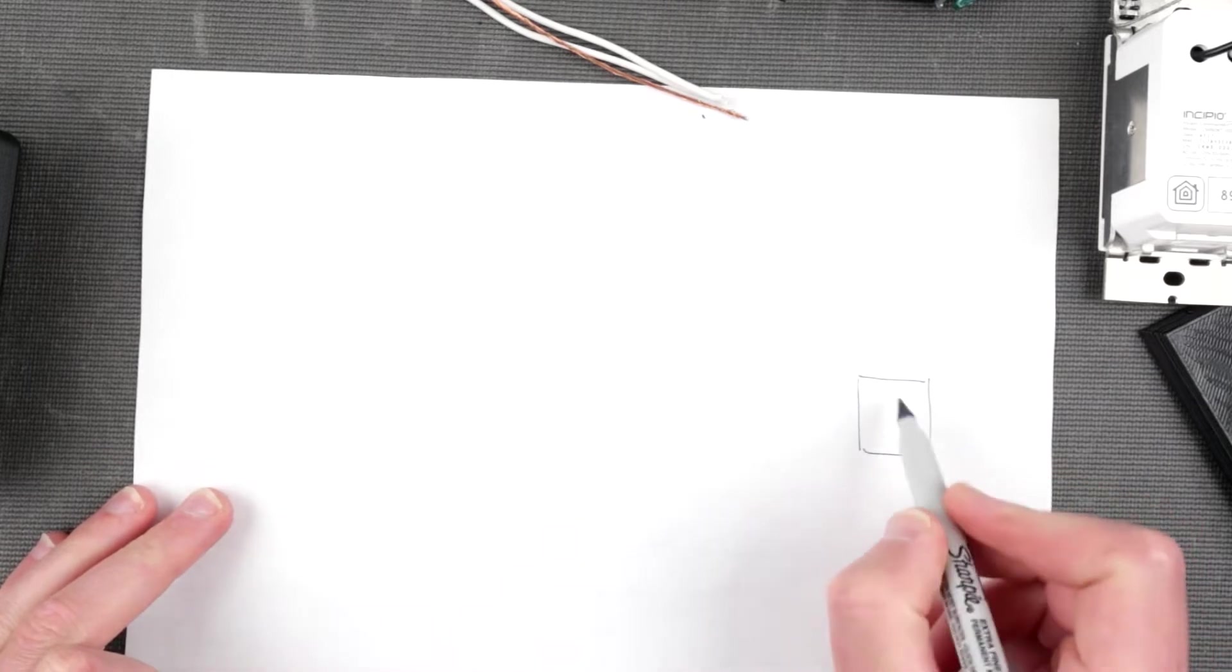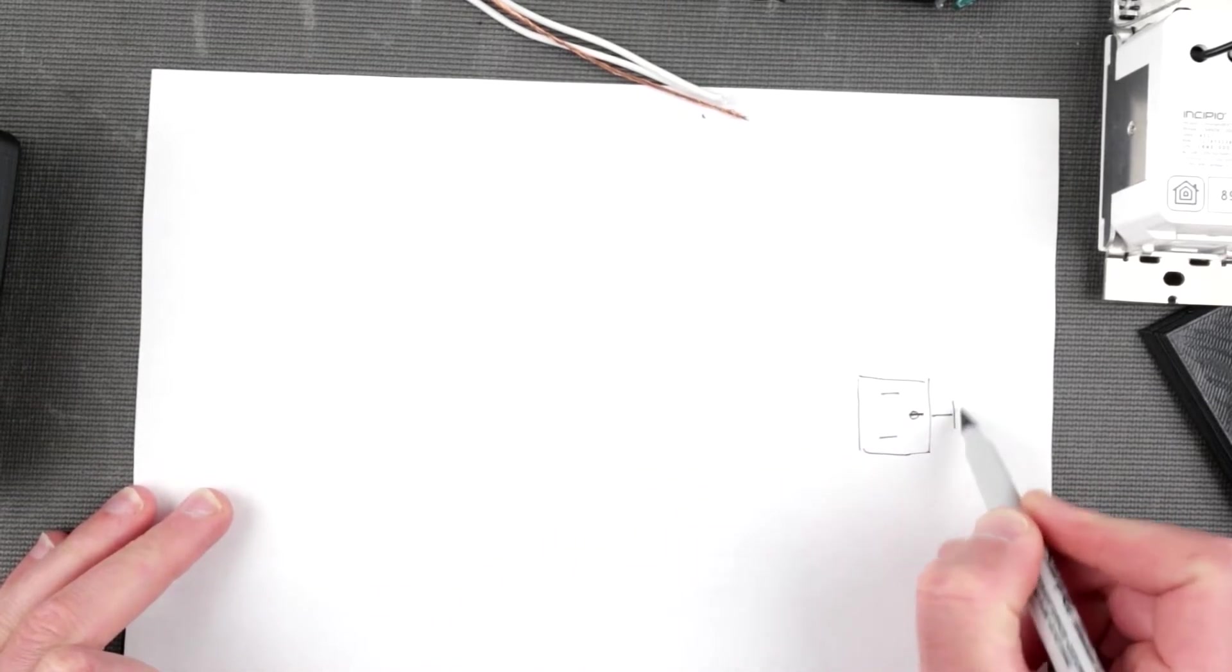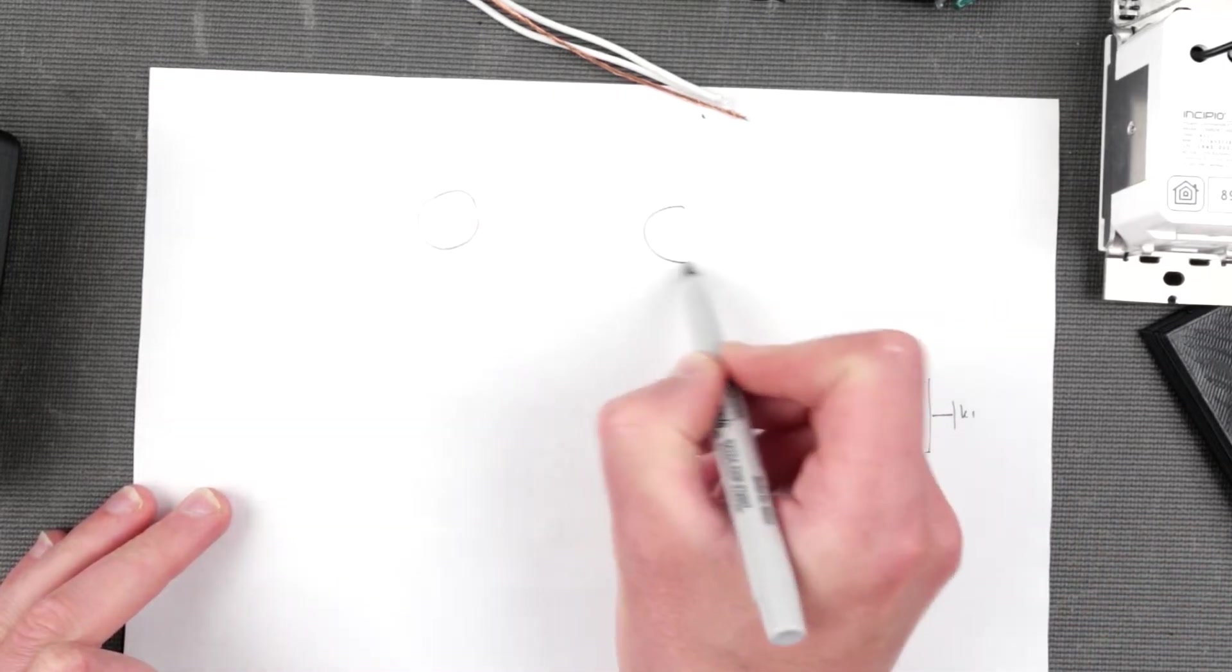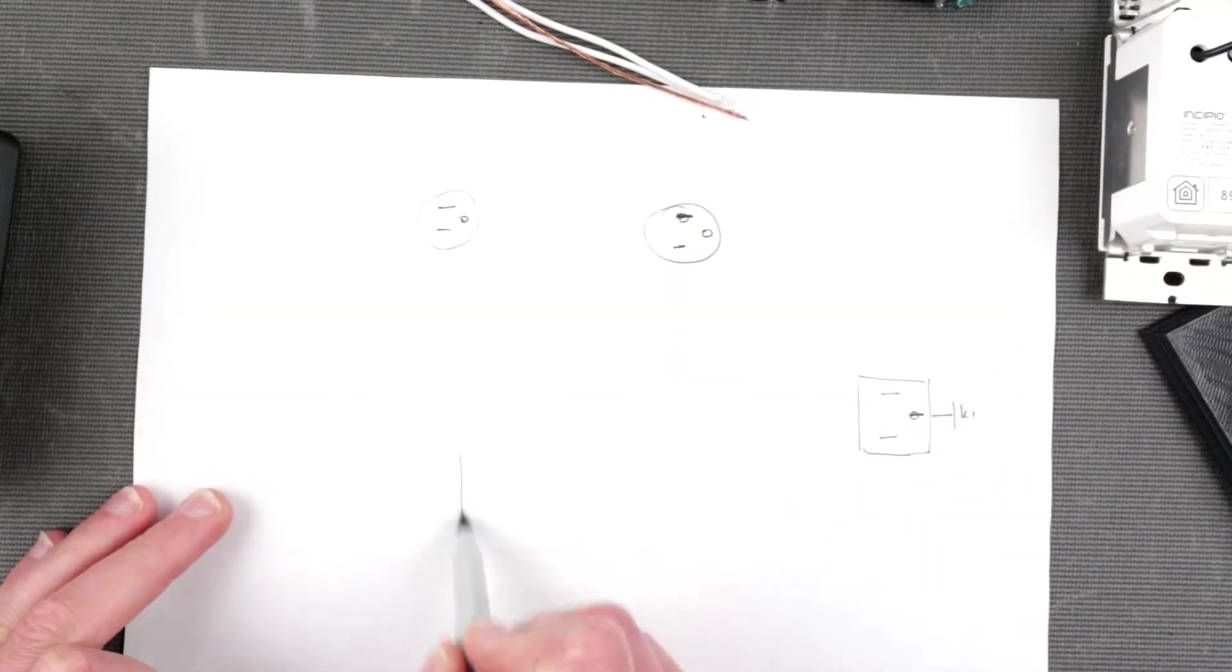So we have our outlet, we have our power plug. This is ground, then we have our power outlet. And here, our dimmer.